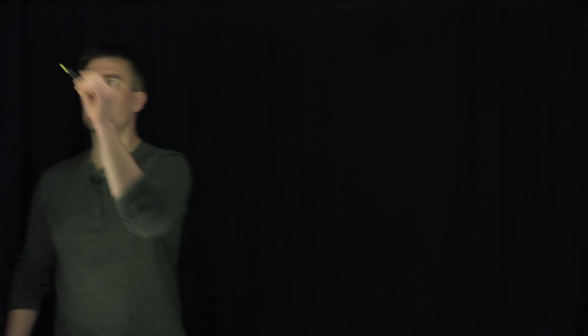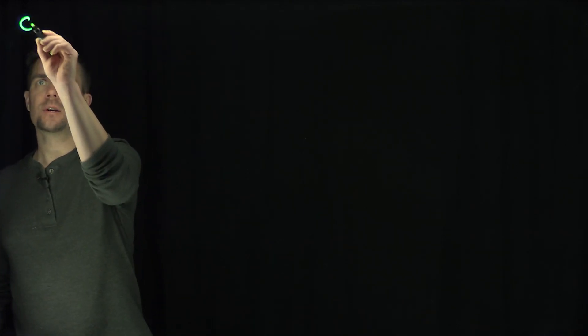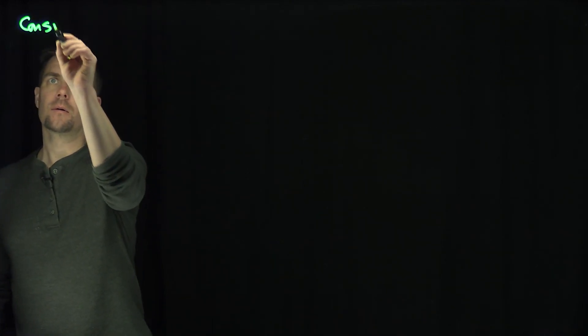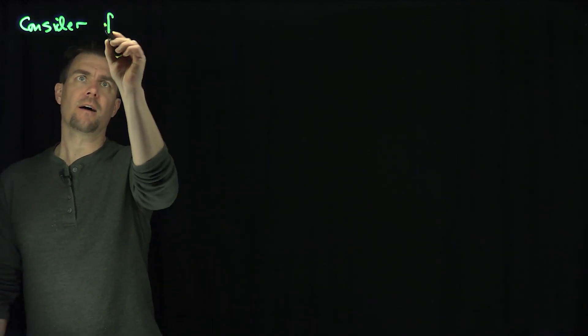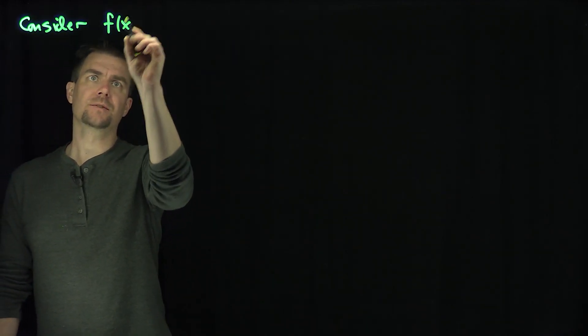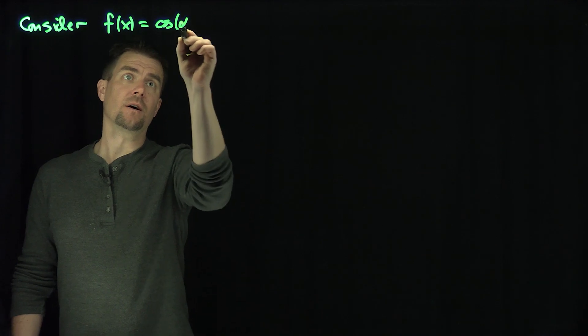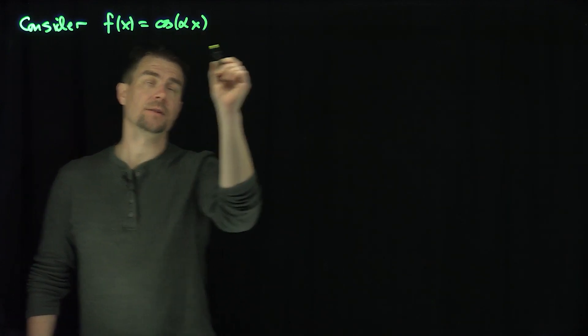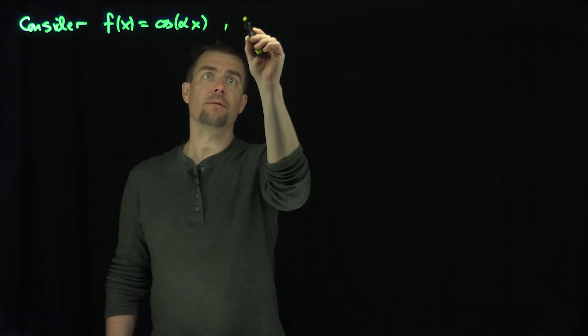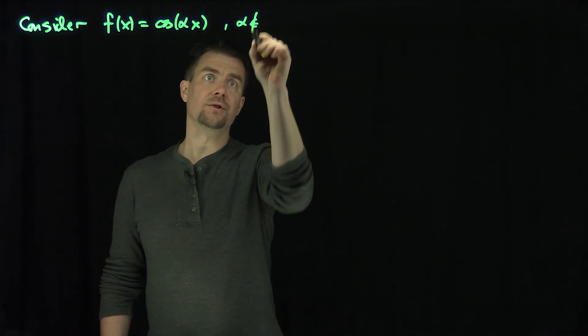Hello, students. In this video, we'll find the Fourier series for the cosine of alpha x, where alpha is not an integer. So let's consider f(x) = cos(αx), where alpha is not an integer.